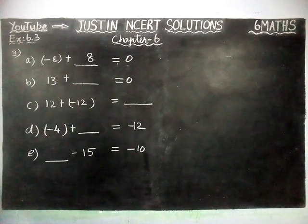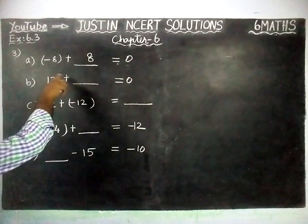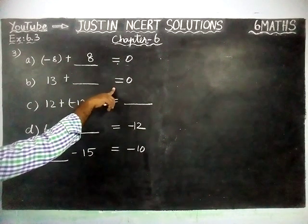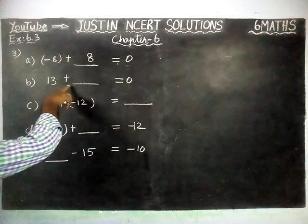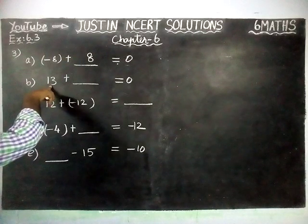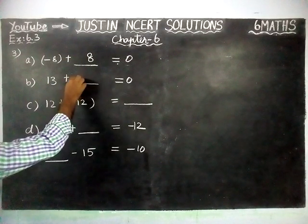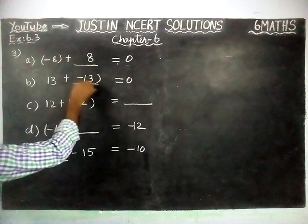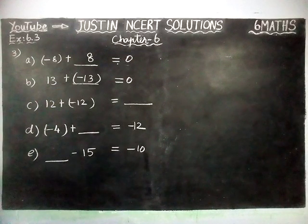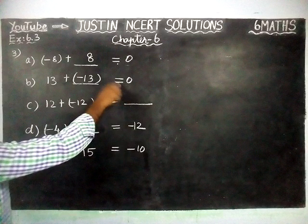Part B: Here also, 13 plus dash equals 0. To get 0, we have to add additive inverse. So additive inverse of plus 13 is equal to minus 13. Plus 13 minus 13 equals 0.